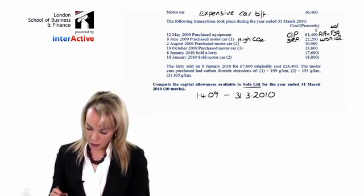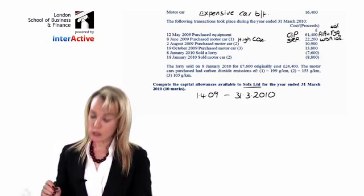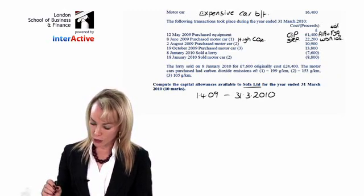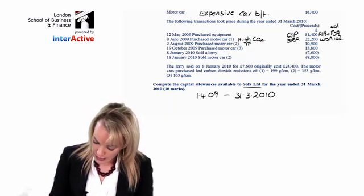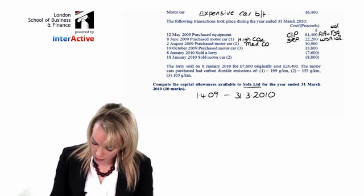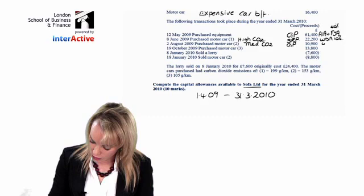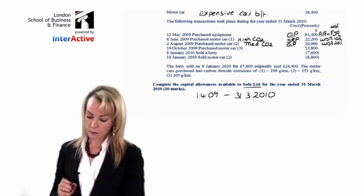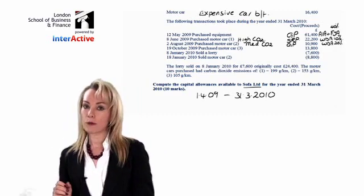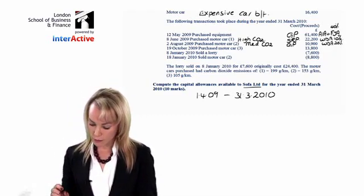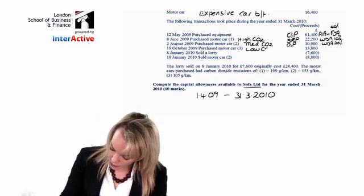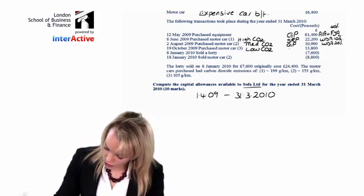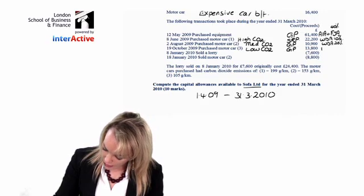We have another motor car — motor car two — with a carbon dioxide emission of 153 grams. This one is a medium CO2 car, which goes into the general pool and gets a WDA at 20%. The third one is a motor car with a carbon dioxide emission of 105 grams. That's a low emission car, which also goes into the general pool and gets an FYA at 100%.